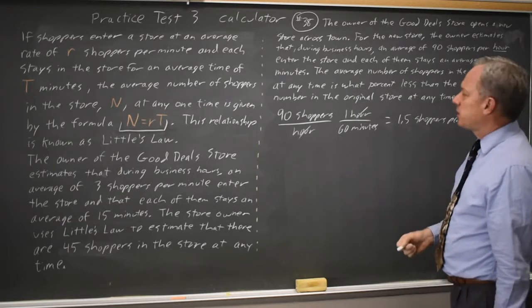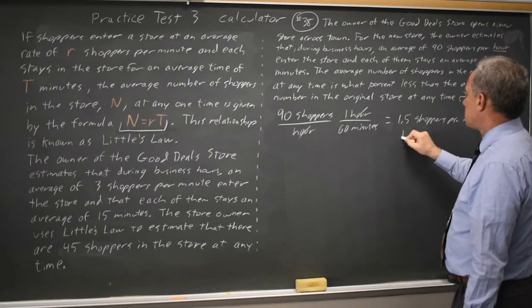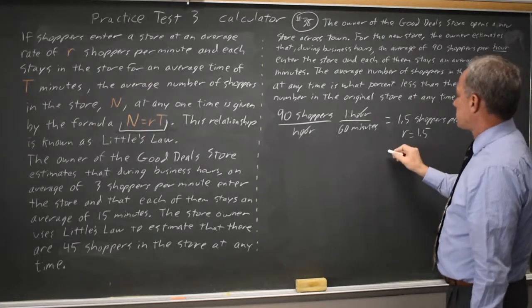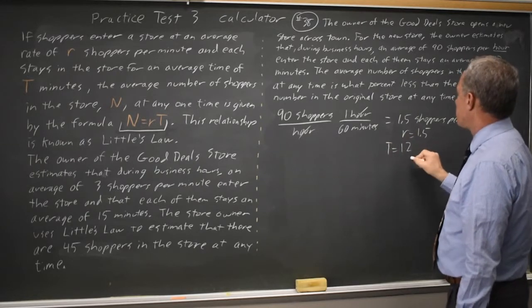R, the rate, is shoppers per minute. R equals 1.5. I'm told here they stay for T equals 12 minutes.